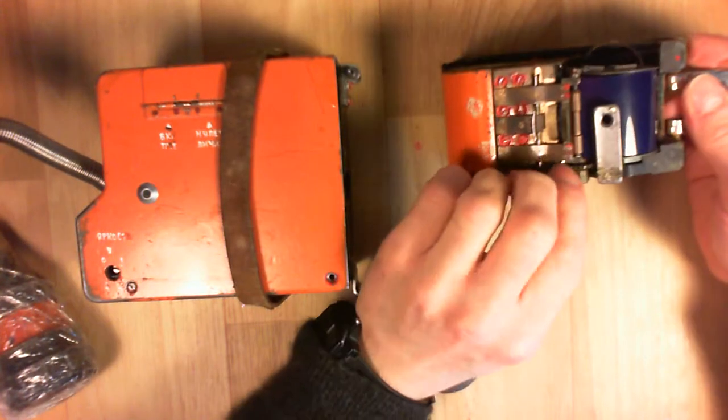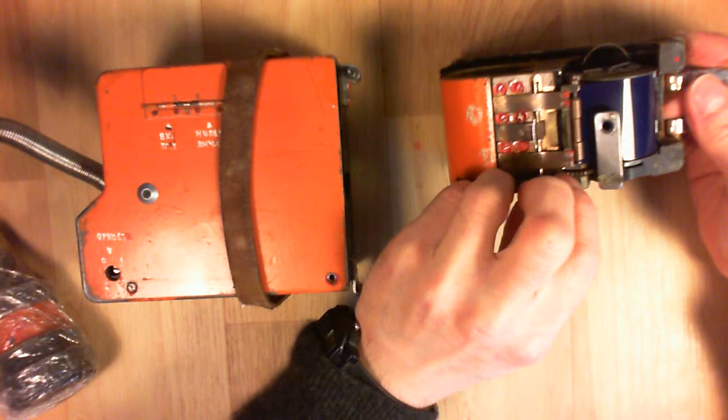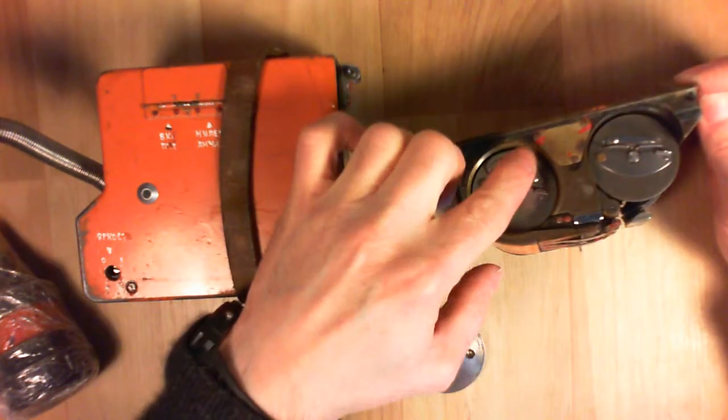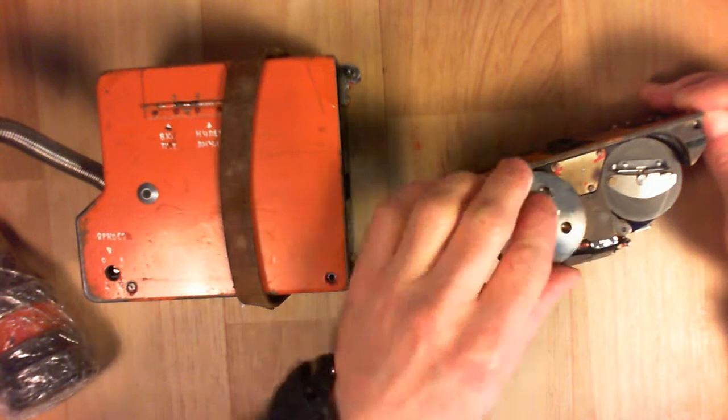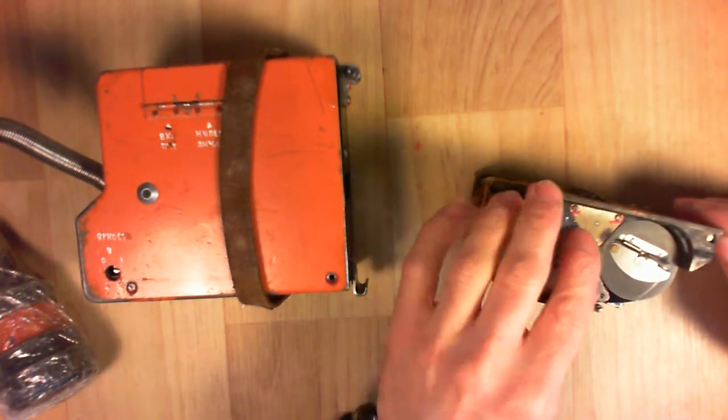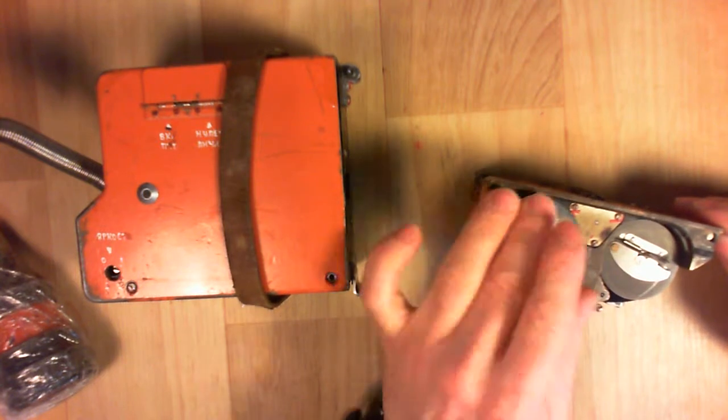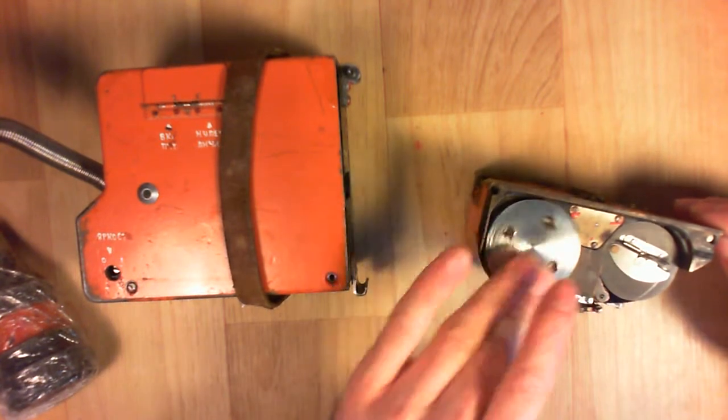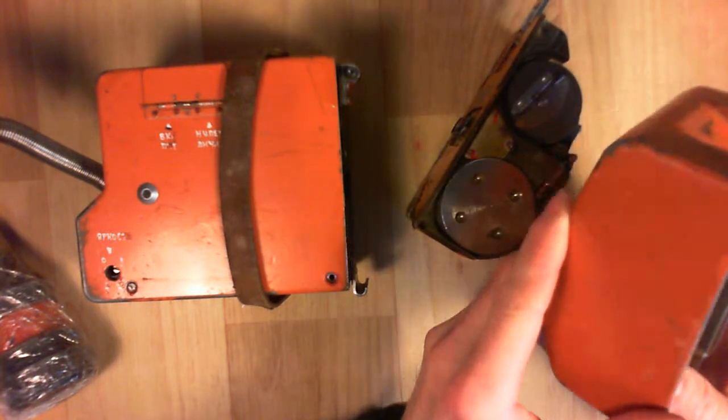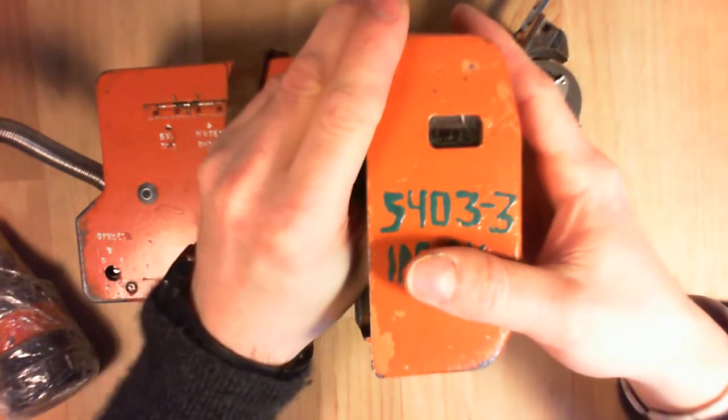You have a gear here to make it turn. Once recorded, the film goes in this storage compartment. How does it work? Let me put the cover back. Here you have an indicator for the remaining time of the film.